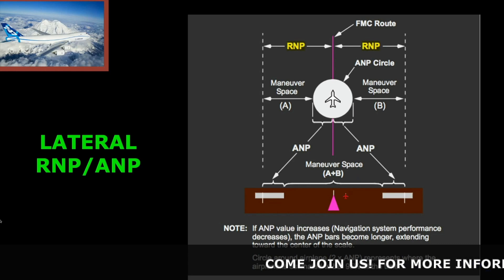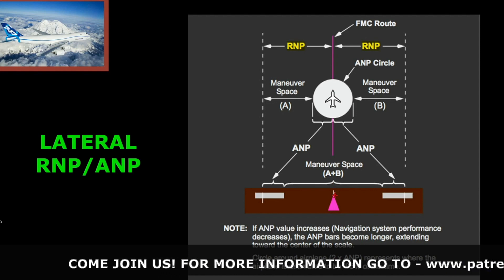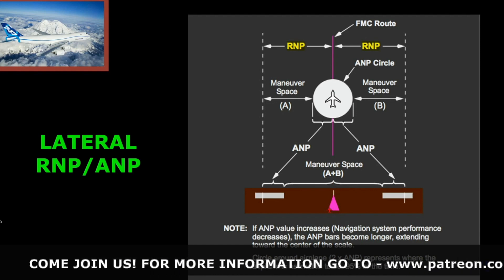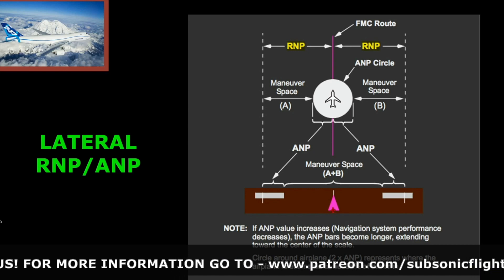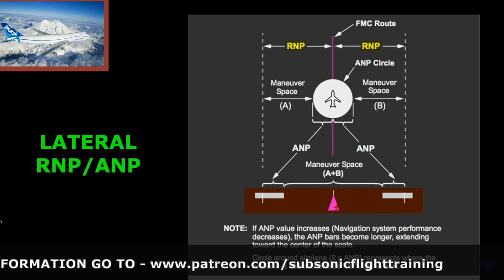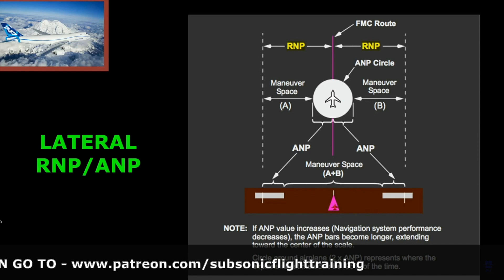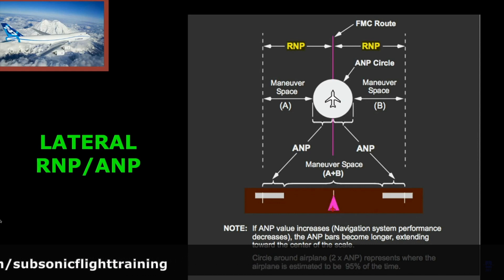The airplane position is represented by the little vertical hash mark — that's where the airplane is. This triangle represents the FMC, in this case the lateral position of the FMC, for example if you're in LNAV. In this case the airplane position and the LNAV position would be right on.